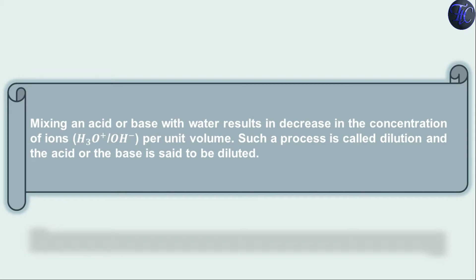Mixing an acid or a base with water results in a decrease in the concentration of ions per unit volume. When you add acid or a base to water, the ion concentration decreases per unit volume. Such a process is called dilution, and the acid or base is said to be diluted.